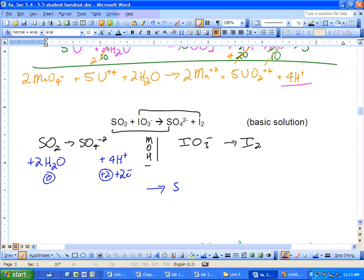Write it nice and neat in the center. SO4-2, 4 H+, 2 electrons goes to SO2 and 2 waters.